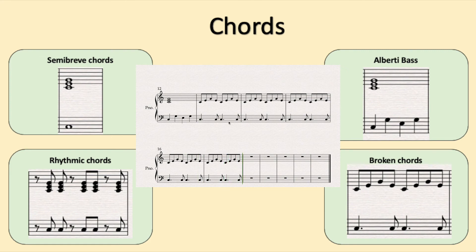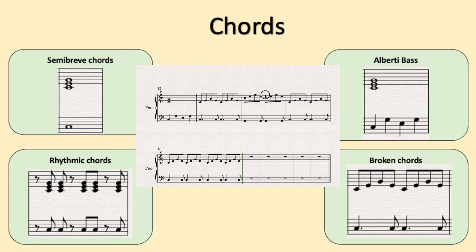Now you wouldn't obviously have four bars of the same chord — you would change chord each bar but keep the rhythms the same. So if you had a broken chord and a bass rhythm like this for the first bar, you'd change your chord. Let's do an A minor chord. So we've got a C chord there and an A minor chord here, then another C chord and then another A minor chord.